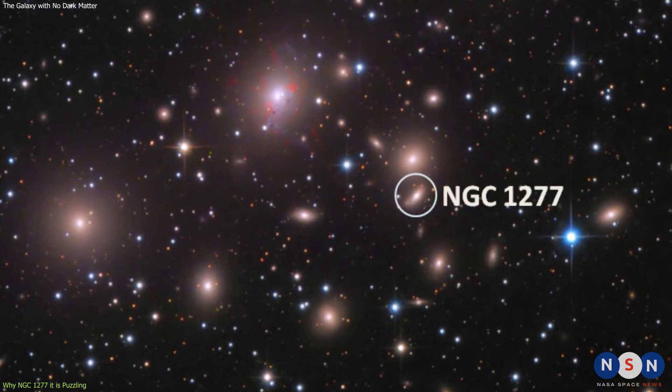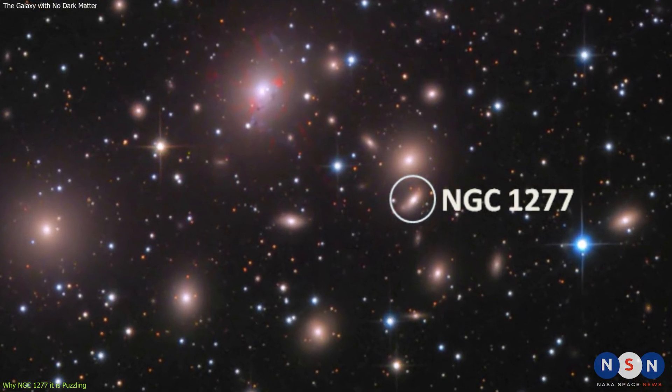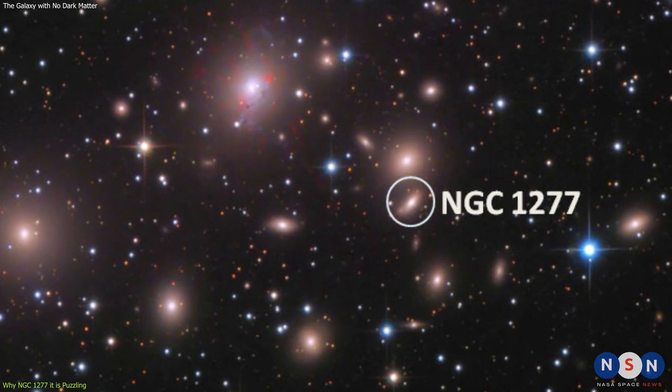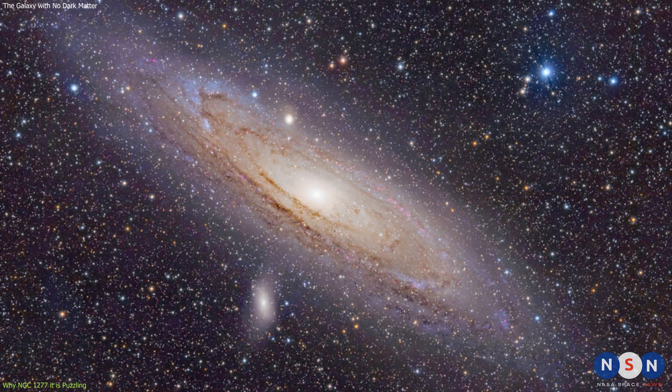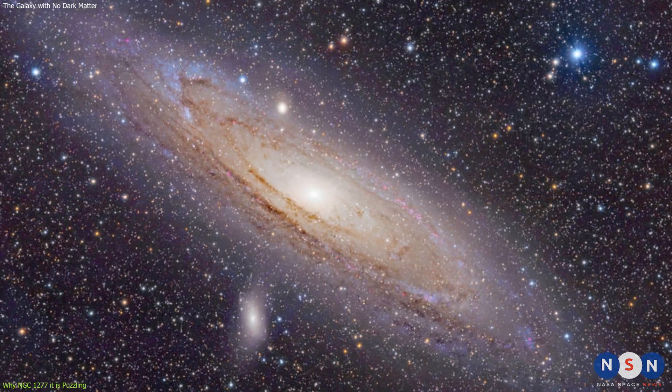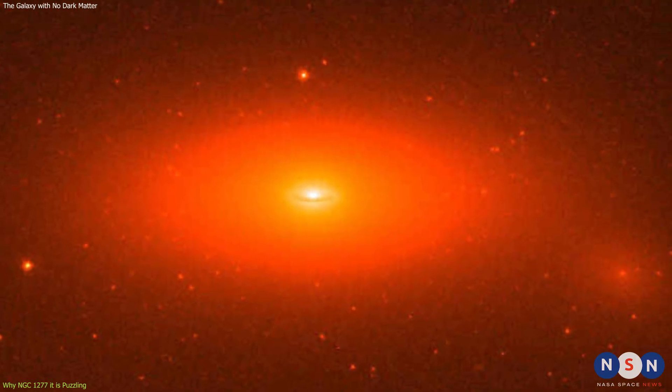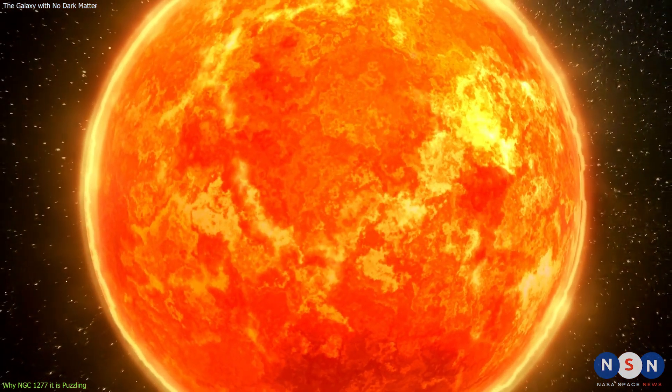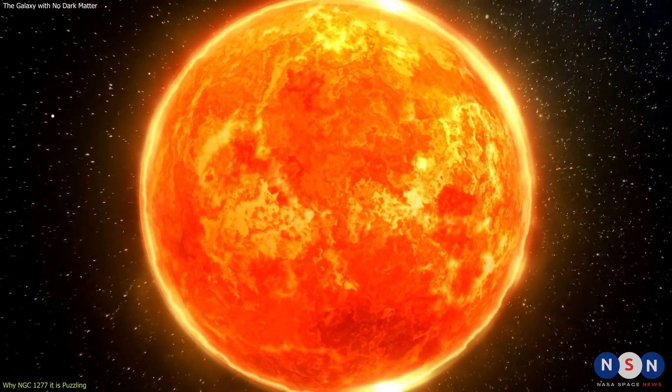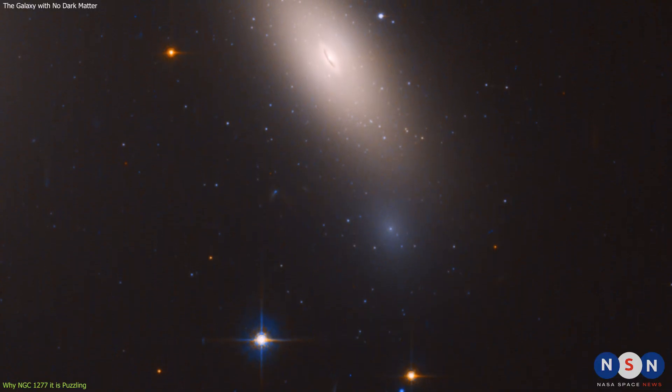NGC 1277 is very small compared to other galaxies in its cluster, with a diameter of only about 20,000 light-years. The Milky Way has a diameter of about 100,000 light-years. It is also very dense, with a mass of about 120 billion times that of our Sun packed into a small volume. It has very few young stars and gas, indicating that it stopped forming new stars long ago.